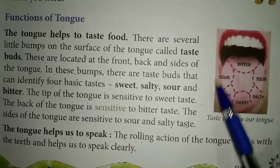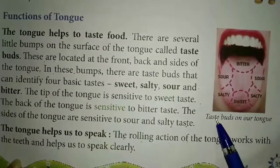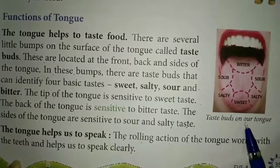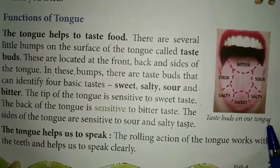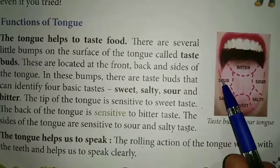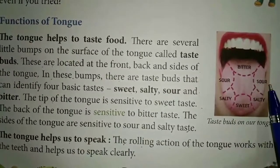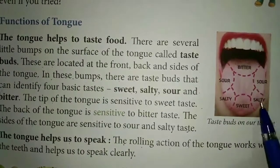Look at this picture showing taste buds on our tongue. Salty, sour, sweet, and bitter regions are labeled — sour and salty on the sides.